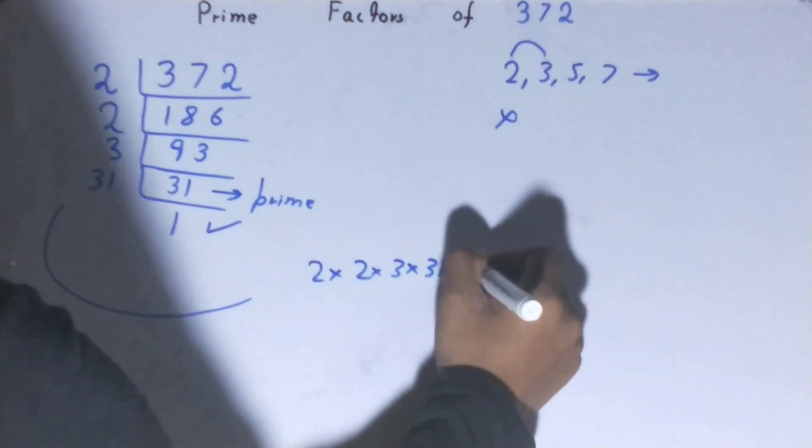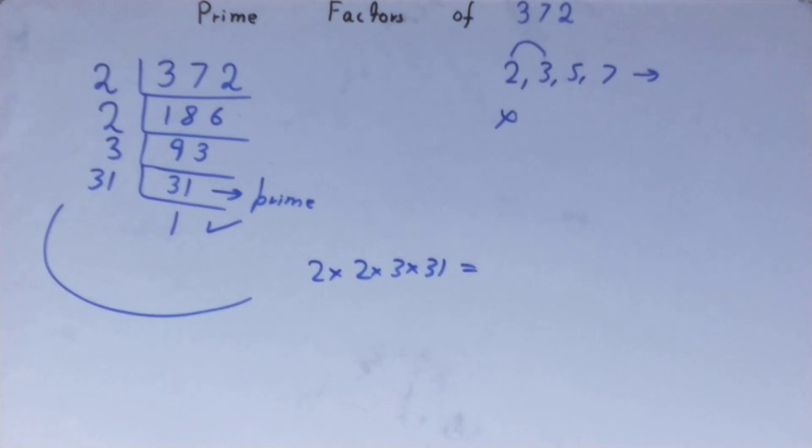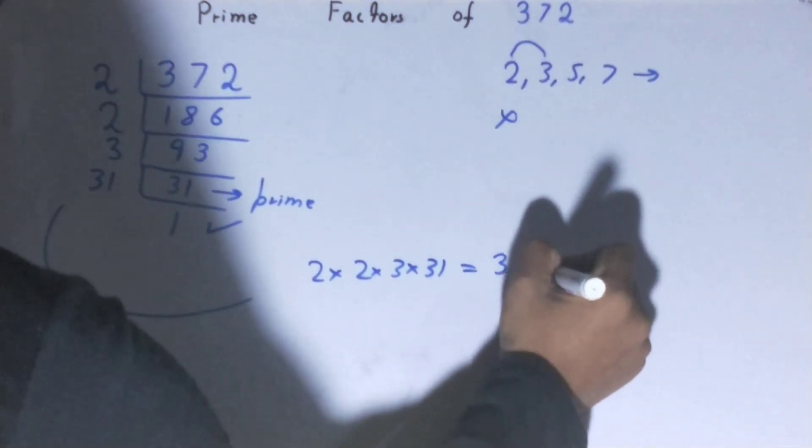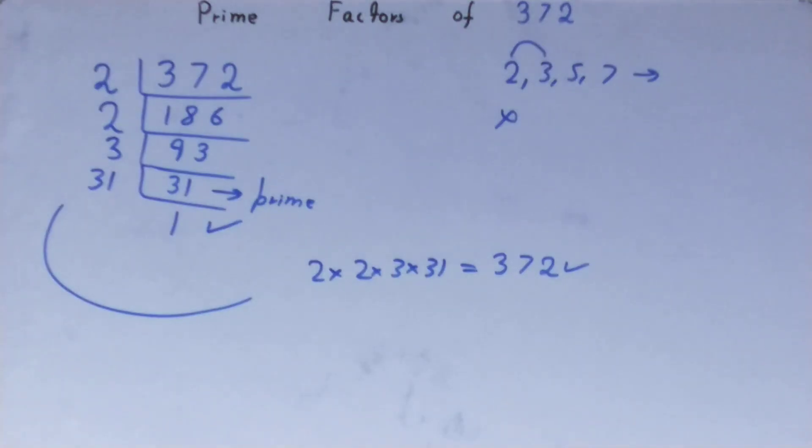If you want to check whether it is right or not, you can multiply them. And if on multiplying you have the number back again, that means your calculation is correct. If not, you need to recheck.